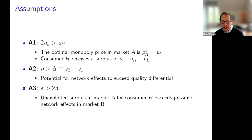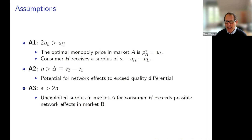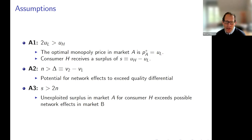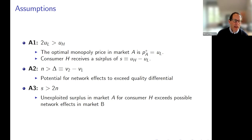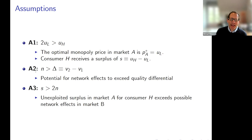There are also possibly network effects that could be realized. Those network effects are such that if both consumers purchase the same product B, each consumer gets an additional value of N as a network benefit. I normalize marginal cost to be zero for all products. I'm going to make three assumptions. Assumption A1 says that 2 times U_L is bigger than U_H — meaning the optimal monopoly price in market A is U_L. It's more profitable to sell to both consumers at a price of U_L than to sell to just the high type at a price of U_H.